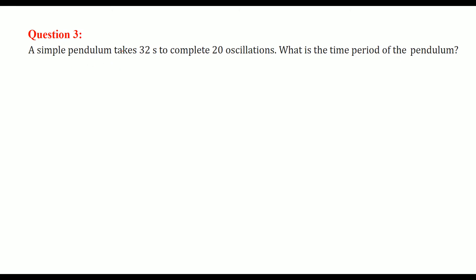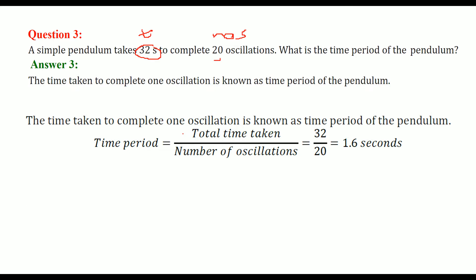A simple pendulum takes 32 seconds to complete 20 oscillations. What is the time period of the pendulum? Time period equals total time divided by number of oscillations. Total time is 32 seconds and number of oscillations is 20. Dividing them, we get 1.6 seconds.